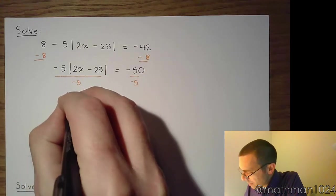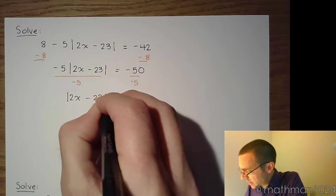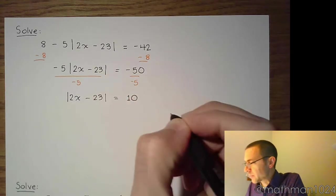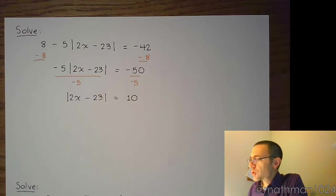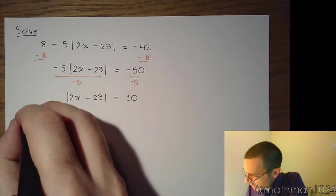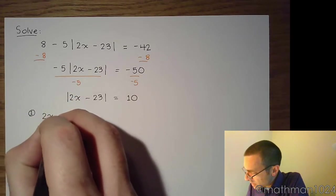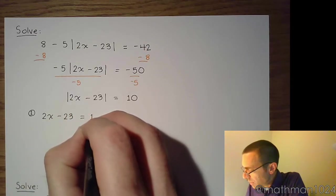So we have the absolute value of 2x minus 23 is equal to positive 10. Now that we have the absolute value by itself, we need to separate into our two smaller equations. So one of those equations will be 2x minus 23 is equal to positive 10.